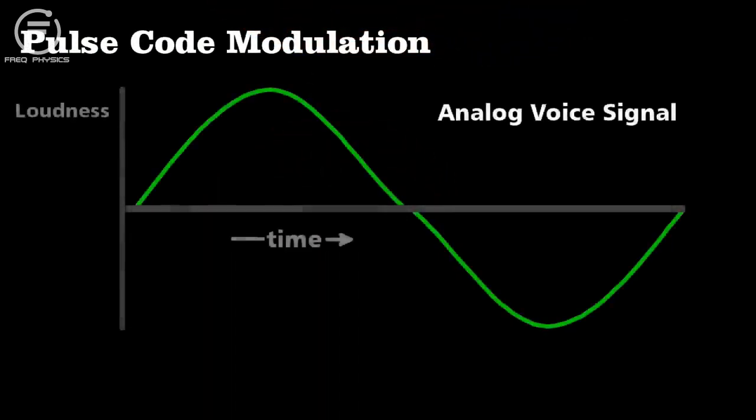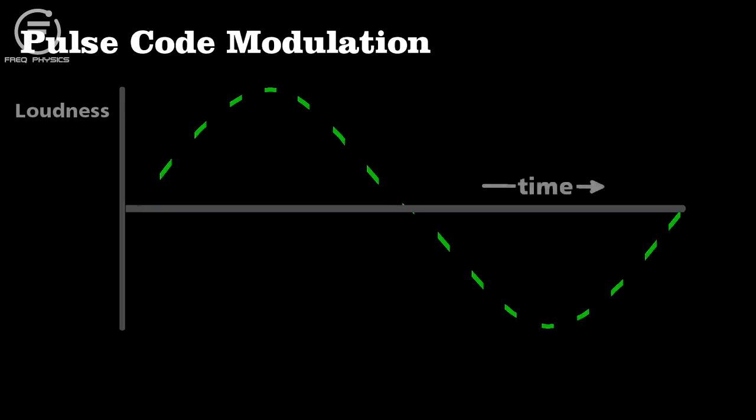To transmit an analog signal like voice from a phone call along the cable, engineers use pulse code modulation. We take an analog signal and cut it up into sections, and then approximate the wave's loudness or amplitude as best we can.